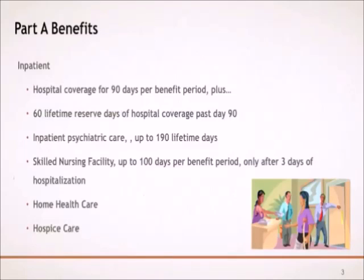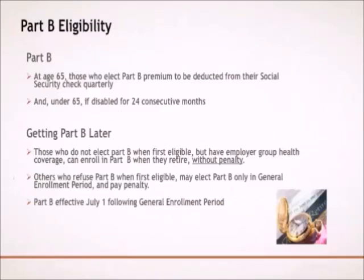At age 65, if you elect to join Medicare and subscribe to Part B of Medicare, your Part B premium is deducted from your Social Security check. If you have delayed taking Social Security, then you will mail your Part B premium to Social Security quarterly. If you fail to make your Part B monthly premium payments, Medicare will drop you from Part B coverage.